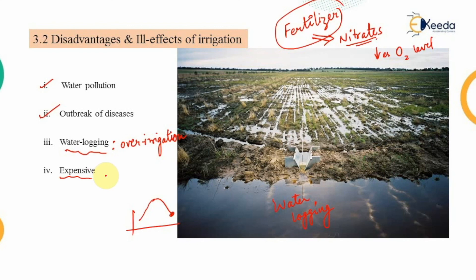This completes the advantages and disadvantages of the irrigation system. In the next video we will look at the different types of irrigation systems and how we classify them as major, minor, and medium. Thank you.